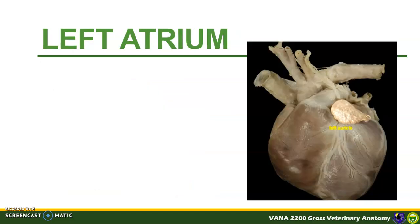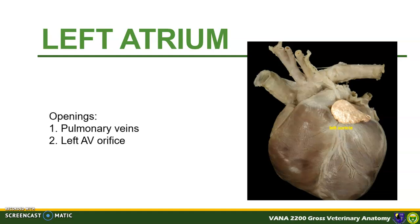The left atrium forms the left dorsocaudal part of the base and receives oxygenated blood from the lungs via the pulmonary veins. Anatomically, it is similar to the right atrium in both structure and shape, with a left auricle. Its openings include the pulmonary veins, where blood from the lungs enters the heart, and the left AV opening, where blood from the left atrium exits to enter the left ventricle.